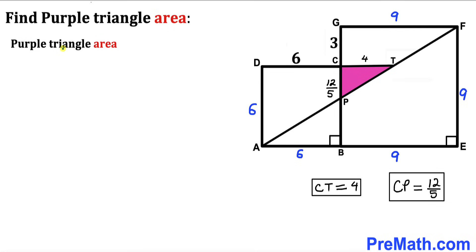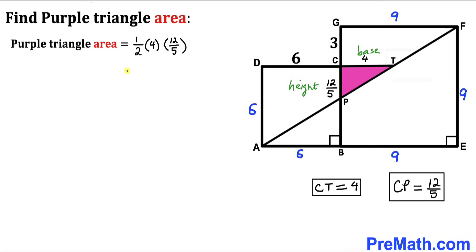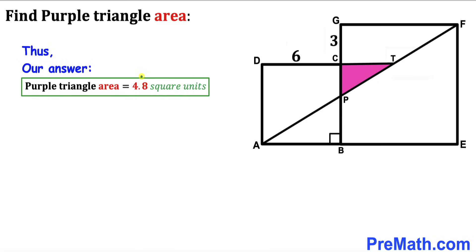Here's our final step. Let's calculate the area of this purple shaded triangle CPT. Recalling the area formula — area equals one half times base times height — our base is 4 and our height is 12/5. So the area is one half times 4 times 12/5, which equals 24/5, or 4.8 square units. Thanks for watching, and please don't forget to subscribe to my channel for more exciting videos.